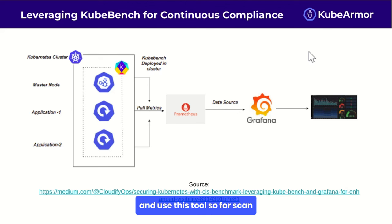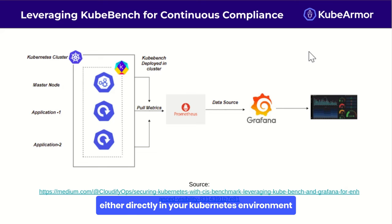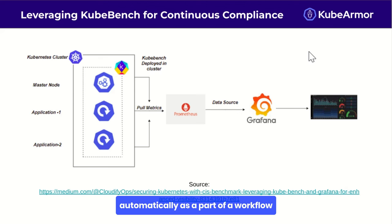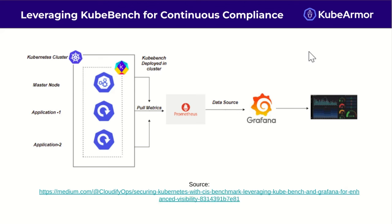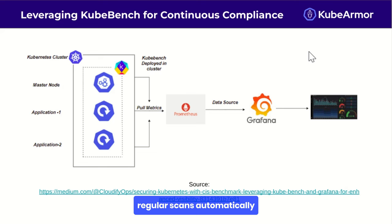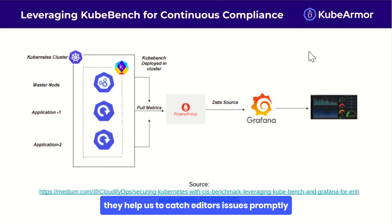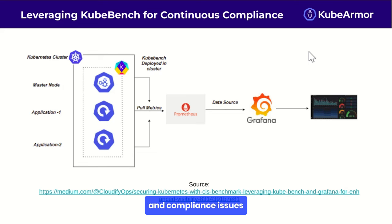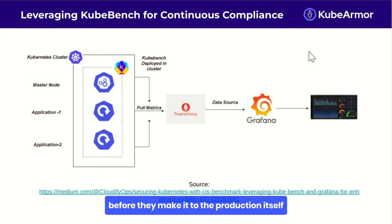To effectively integrate and use KubeBench: first, install KubeBench either directly in your Kubernetes environment or within your CI/CD pipeline so security checks run automatically as part of the workflow. Then set up KubeBench to run regular scans automatically — regular scans are crucial for maintaining ongoing compliance and catching issues promptly. Incorporate KubeBench into your development process to catch misconfigurations and compliance issues before they reach production, reducing the risk of deploying insecure configurations.